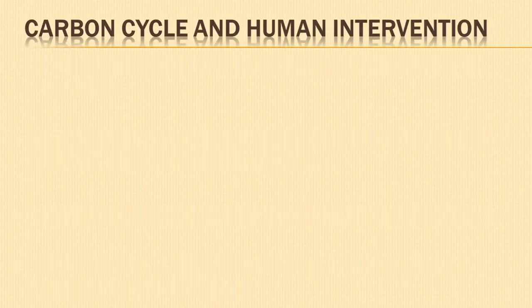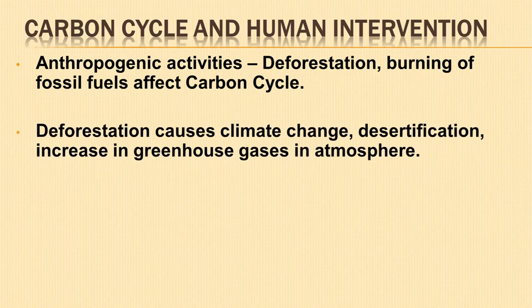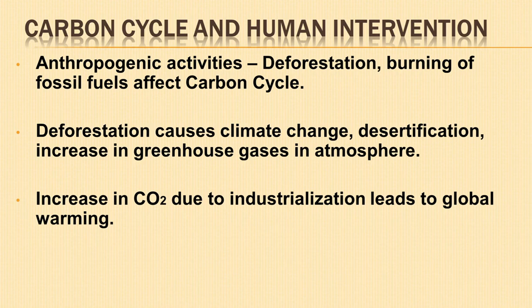Next, let us understand carbon cycle and human intervention. Anthropogenic activities like deforestation, burning of fossil fuels and changing land use affect the carbon cycle. Earth's supply of carbon sinks is depleted due to deforestation or cutting down trees. As a result, the amount of carbon in the atmosphere is being disturbed. Deforestation causes climate change, desertification and increase in greenhouse gases in the atmosphere. With industrialization, the concentration of carbon dioxide in the air is increasing, causing disturbance in the natural regulation of temperature in the atmosphere. This leads to global warming.